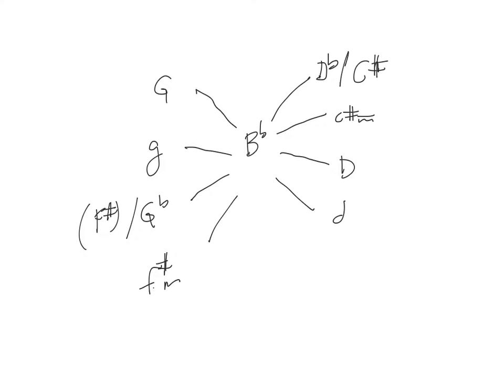You find the major and minor possible keys or chords that are in relationship to your home key. Now let's define these exact relationships. Let's take a look at how many notes they have in common with the home chord. B-flat, D, F has certain notes in common with these other related chords or keys.